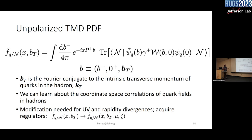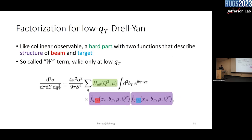You have UV and rapidity divergences that come into play, so you need to modify what this looks like. You acquire these regulators in mu and zeta, where mu is your UV regulator and zeta is your rapidity regulator. I'm not going to go too much into detail on those, but this is needed for renormalization.